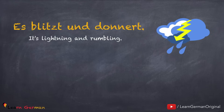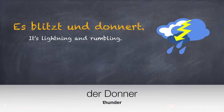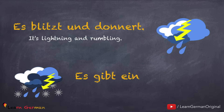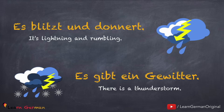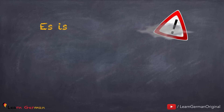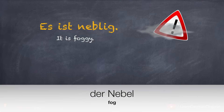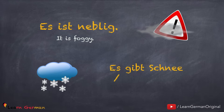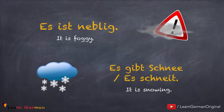Es blitzt und donnert. Der Donner. Noch einmal — der Donner. Es gibt ein Gewitter. Es ist neblig. Der Nebel. Noch einmal — der Nebel. Es gibt Schnee, oder es schneit.